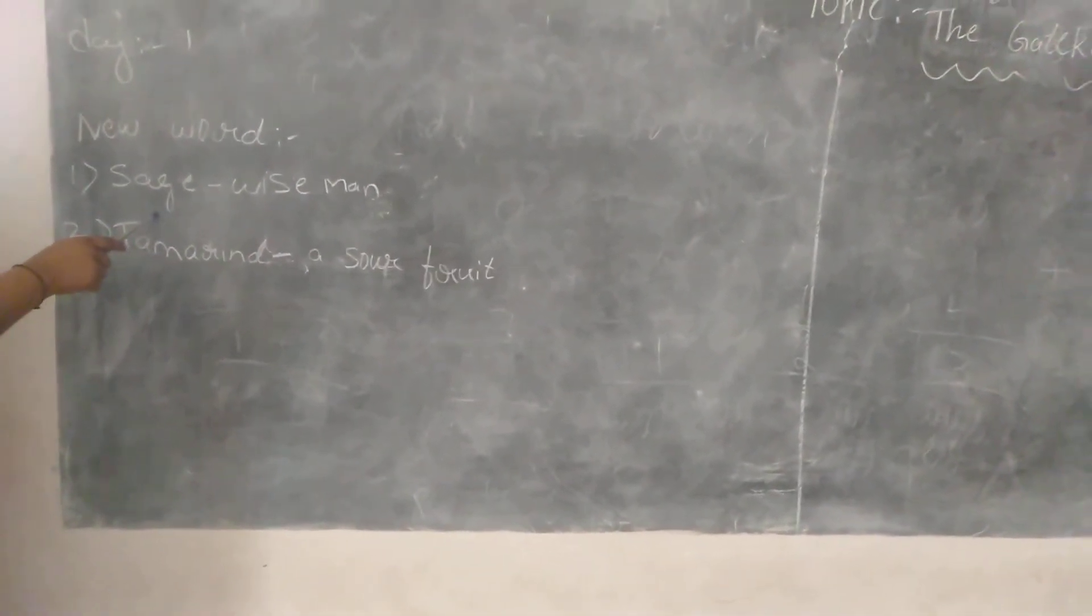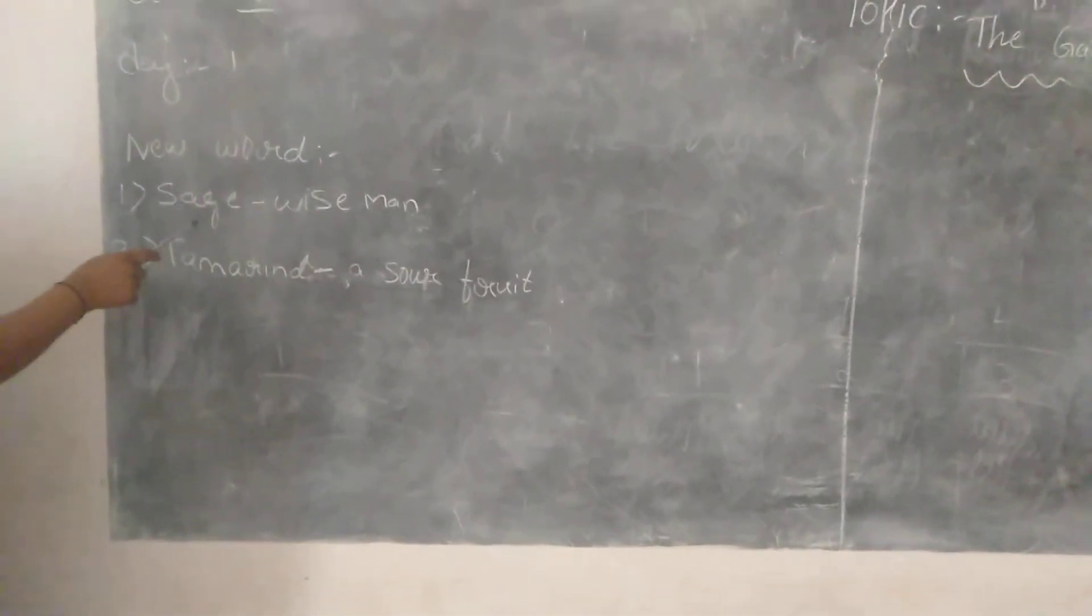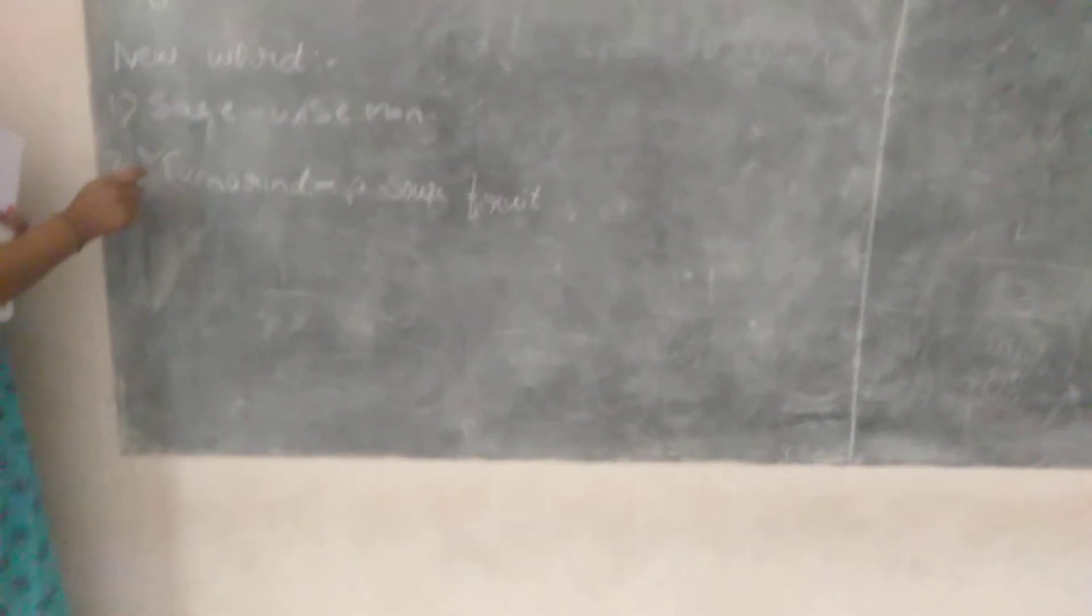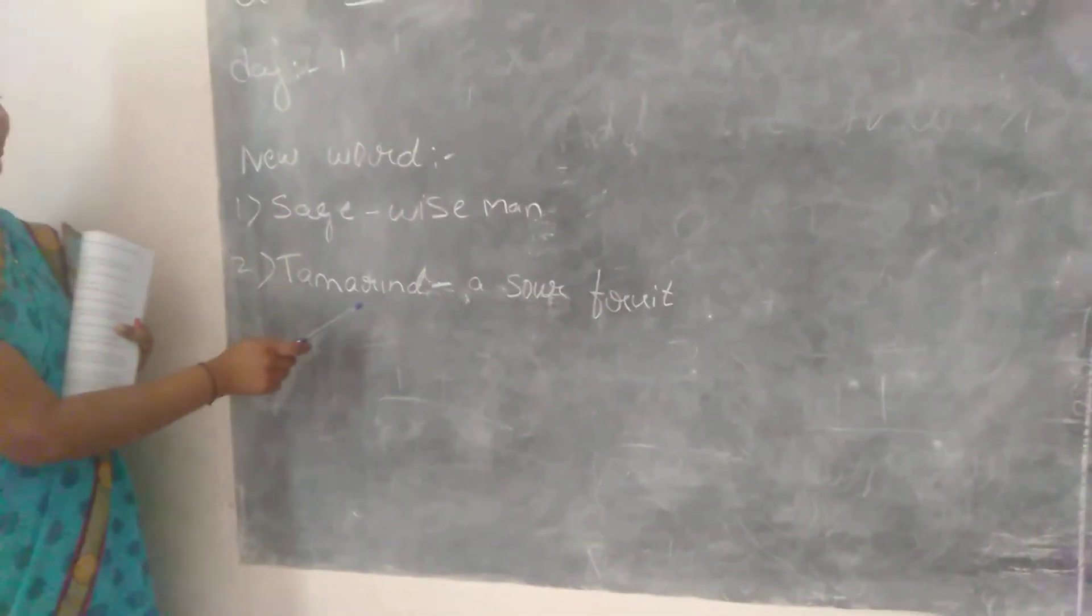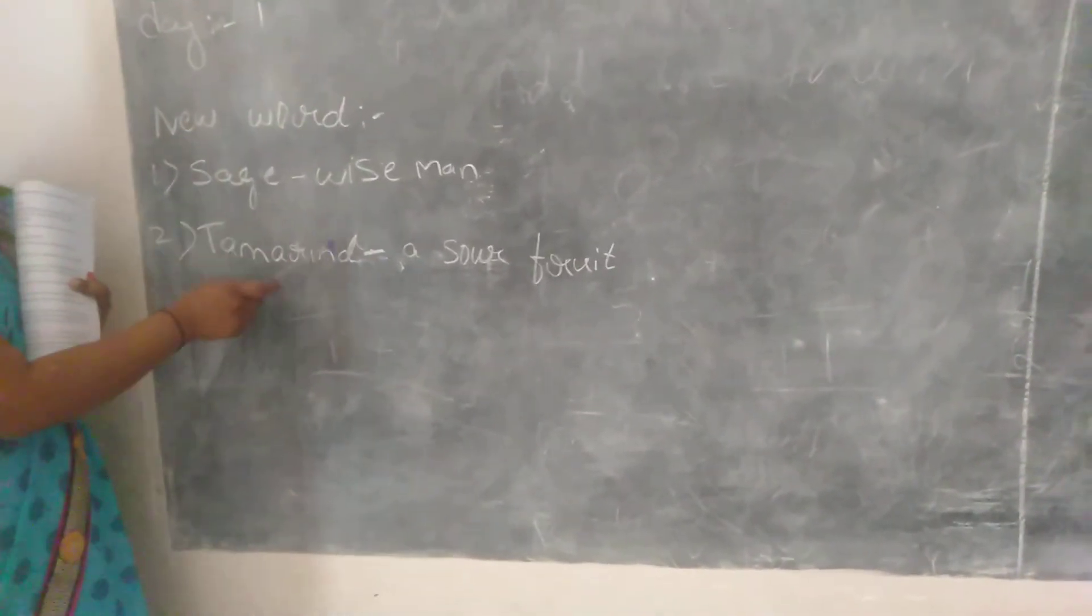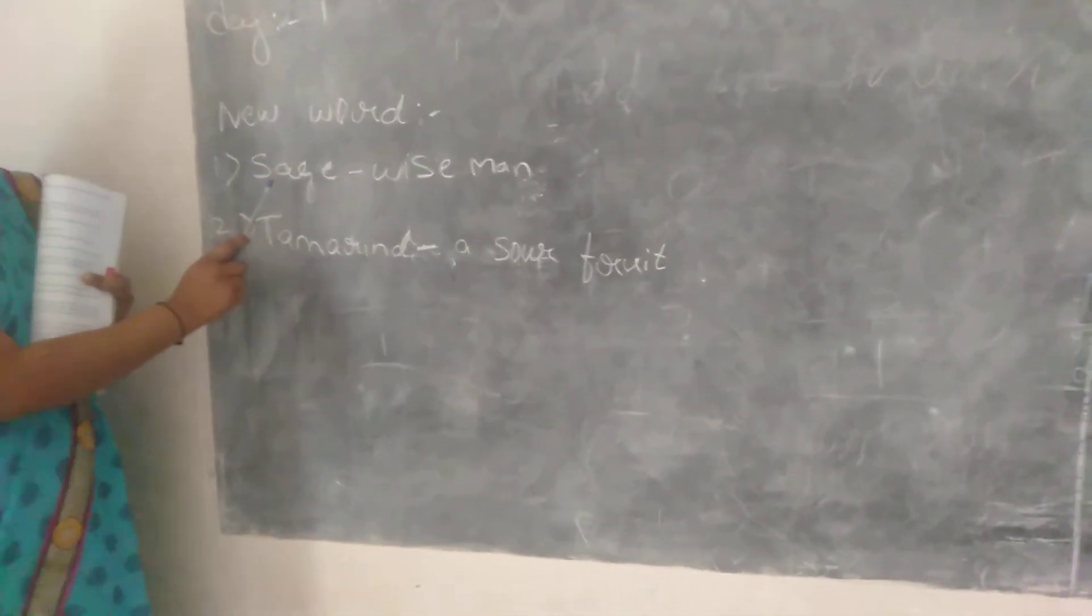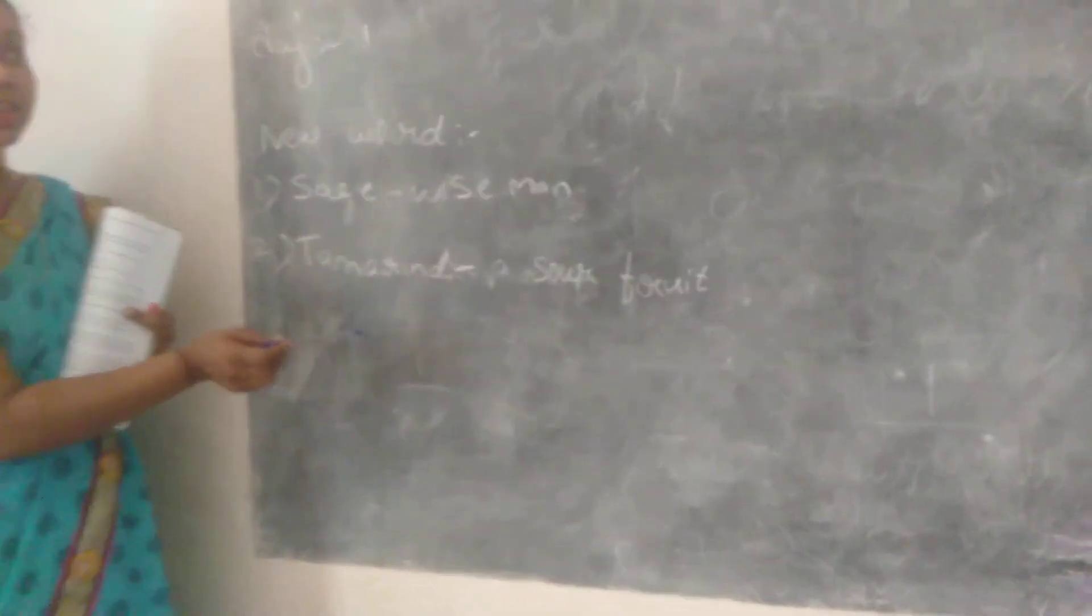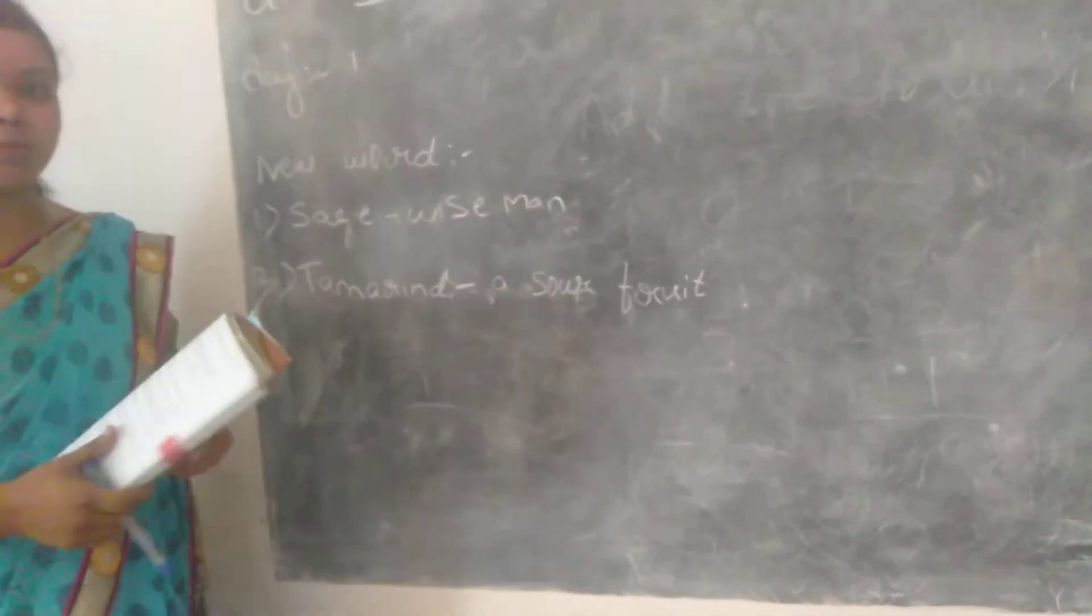Now I will illustrate the new words in your paragraph. So first one word is Sage. What is the meaning of Sage? Sage means the wise man. So next one word is Tamarind. Tamarind means the yes word, fruit, sore root. So I hope you got it in the new words. So new word is very important for understanding the lesson. So now I will explain the lesson.